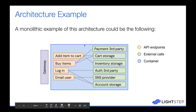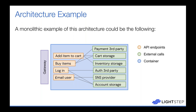Here's a simplified diagram of what this might look like in a monolithic architecture. We have an API gateway where all requests hit before going into our back-end system — think of it as a single container. We have API endpoints: add item to cart, buy items, login, and email user. Each feature hits various external dependencies, which could be a database or a third-party API. Add item to cart talks to cart storage and inventory storage to track the user's cart and check inventory.